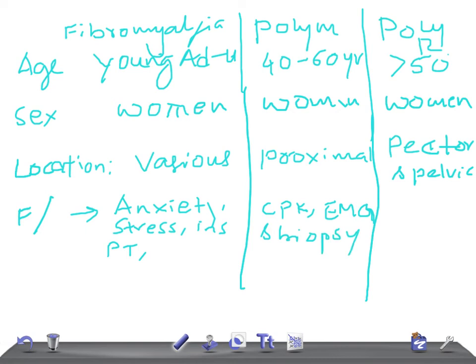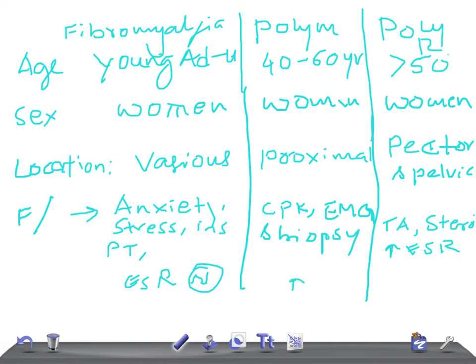For polymyalgia rheumatica, look for temporal arteritis, a great response to steroids, and markedly raised ESR — more than 100. By contrast, ESR is normal in fibromyalgia and elevated in polymyositis, but it is most markedly elevated in polymyalgia rheumatica.